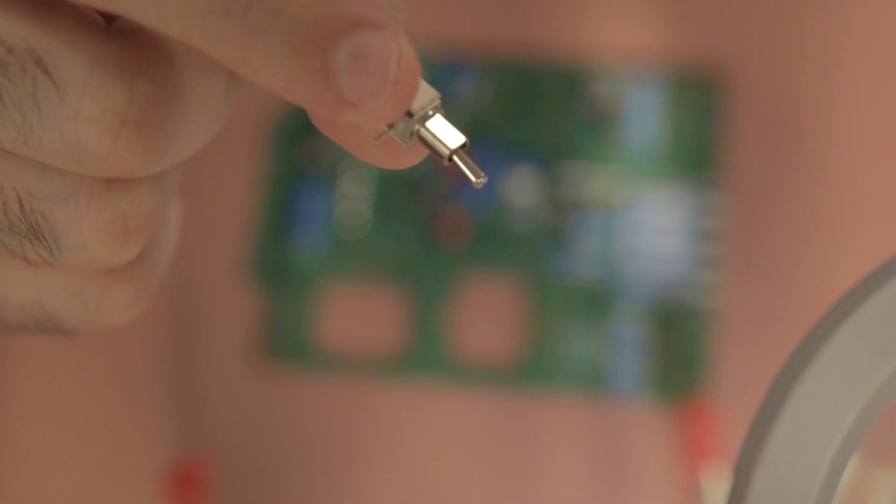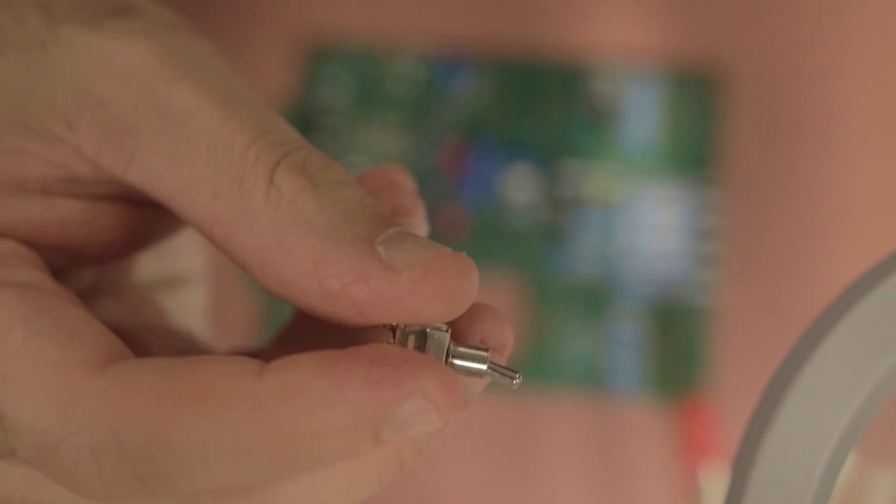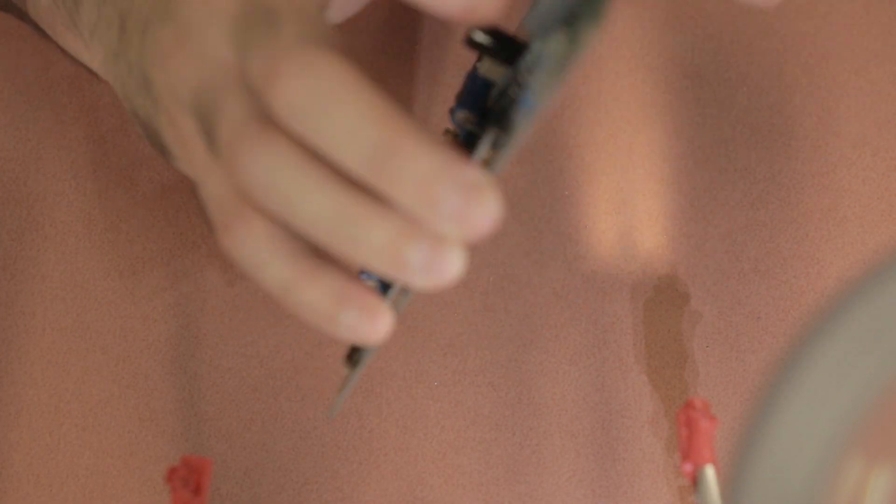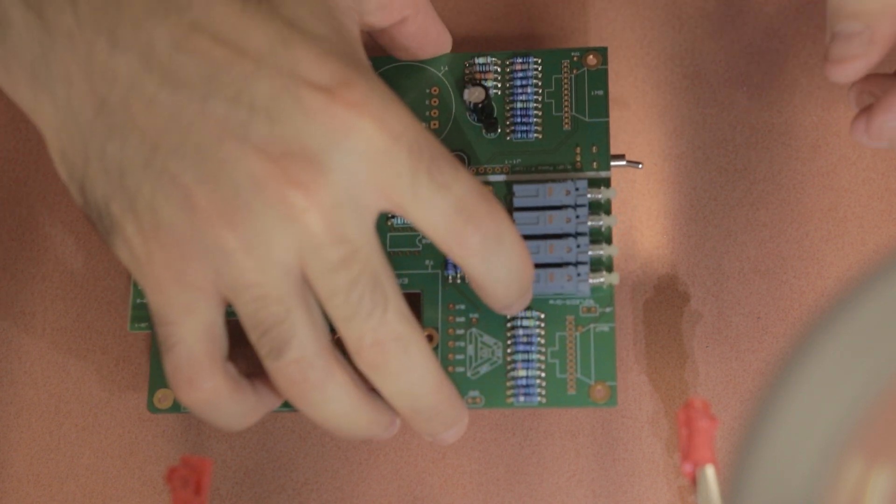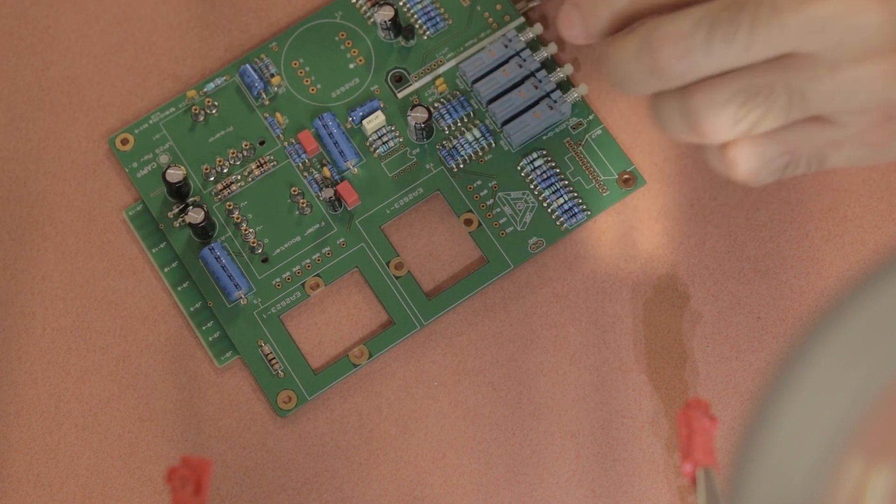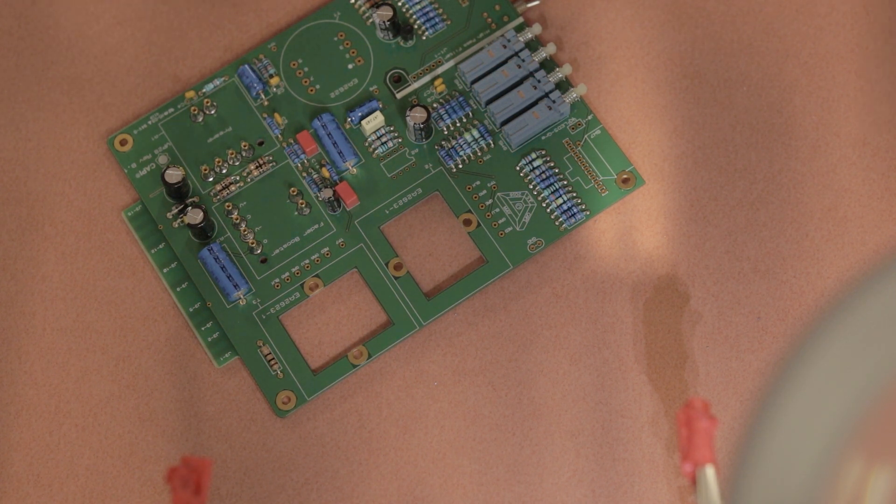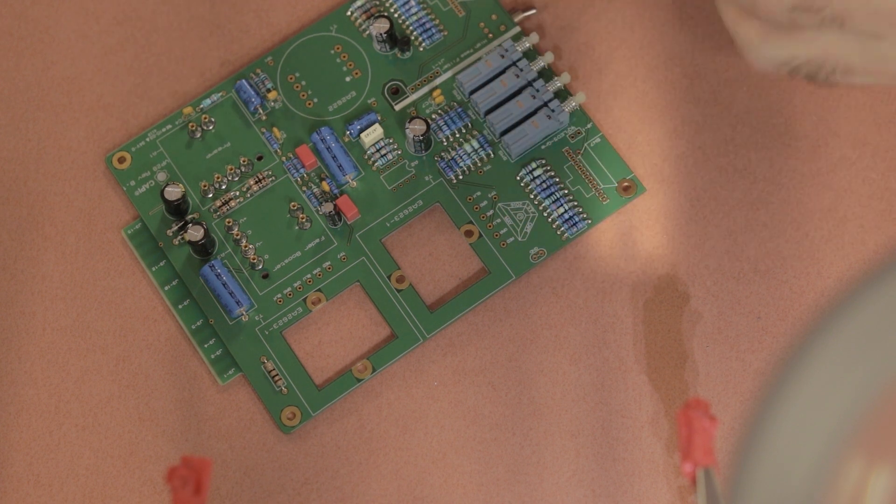Next is the C&K mini toggle switch and this switch mounts from the bottom of the PCB. Basically what it will be for is for toggling between the 6 dB octave and 12 dB octave on the high pass filters which we'll see a bit later.